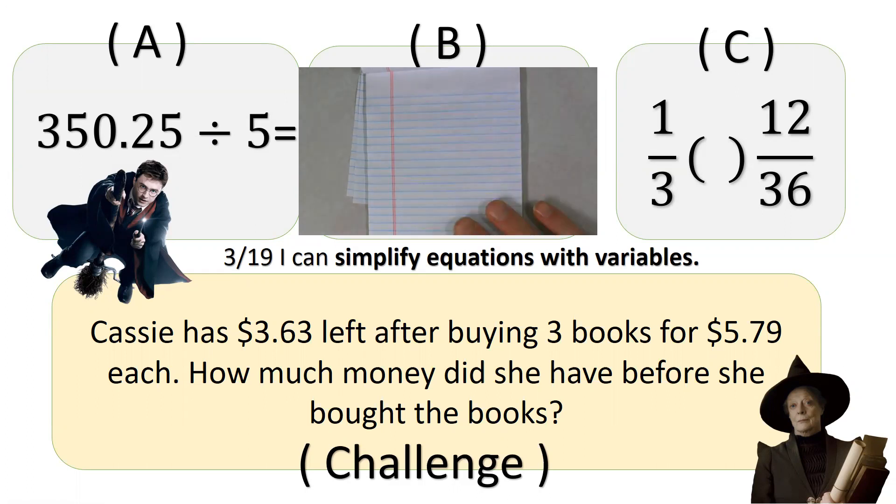The first number you say in division is what you have. So we have 350.25. The second number you say is what you're making groups of. You're making groups of five. So that's how it should be. Where's the decimal? The decimal's inside the house. Do we have to get rid of it? No, the decimal on the side of the house is fine. It's easy. It just floats up.